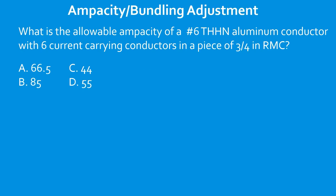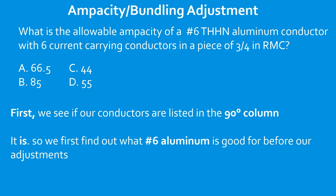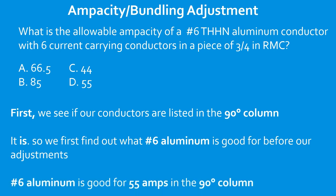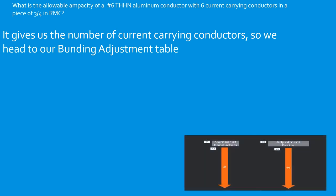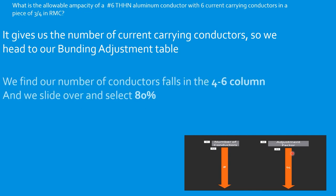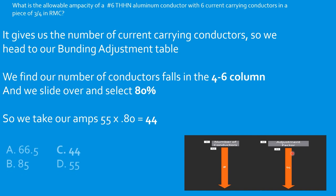Question: What is the allowable ampacity of a number six THHN aluminum conductor with six current-carrying conductors in a piece of 3/4-inch RMC? Confirm THHN is in the 90°C column. Number six aluminum in the 90°C column is 55 amps — be sure to select from the aluminum side. Six conductors falls in the four-to-six range — adjustment factor is 80%, or 0.80. So: 55 × 0.80 = 44 amps. Select C.